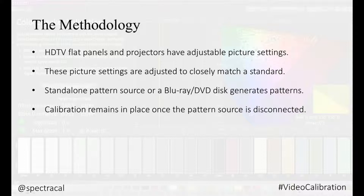HDTV flat panels and projectors, often fed from a media player, have their own adjustable picture settings. These picture settings are adjusted so that the output closely matches that of the selected color standard. Either a standalone pattern source or a Blu-ray DVD can be used to generate these patterns for calibration.